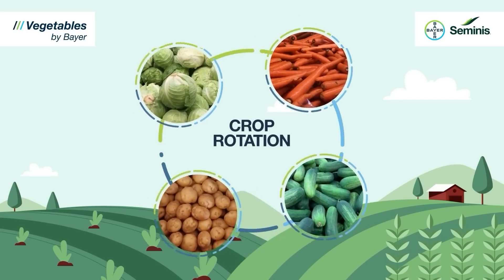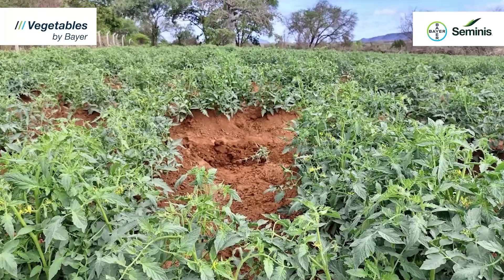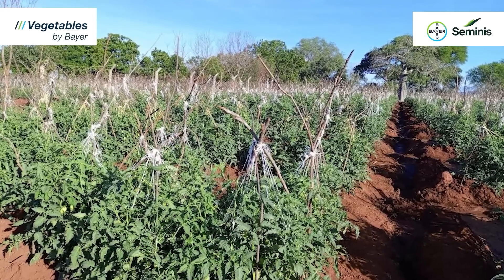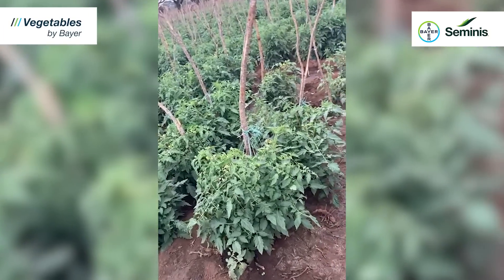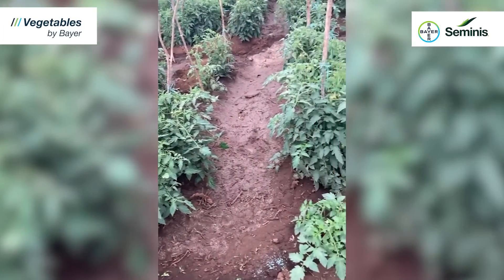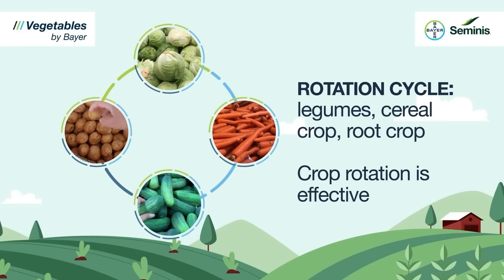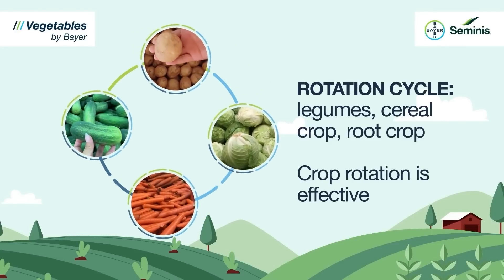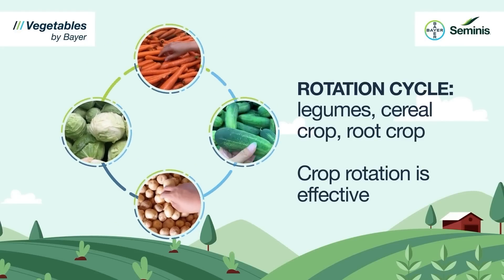Crop rotation is very important in tomato farming since tomatoes are highly susceptible to many soil-borne diseases including early blight and bacterial wilt. Rotating with a crop such as legumes, which is not a host for early blight, will break the cycle and reduce disease pressure.